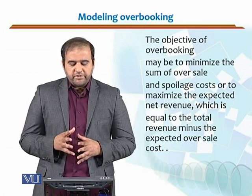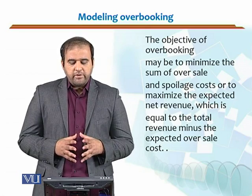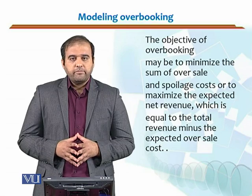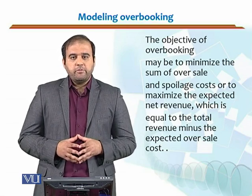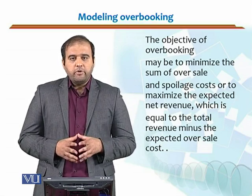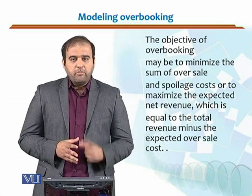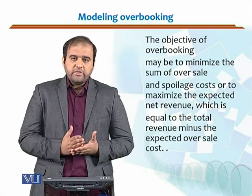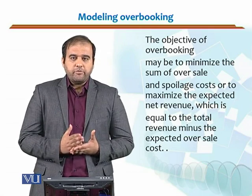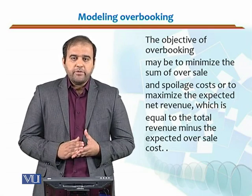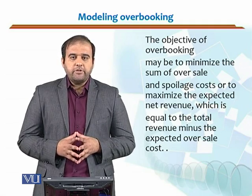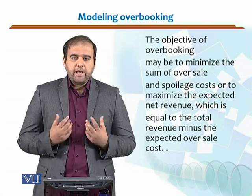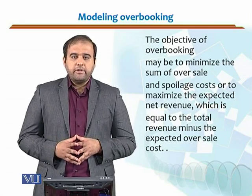The net revenue is actually equal to the total revenue minus the expected oversale cost. This is the basic objective of overbooking. In the overbooking model, we have to look at the expected oversale cost, which would be based on the forecast, and we also have to look at the expected spoilage cost. Based on these, we calculate the expected net revenue.